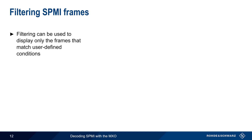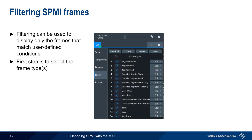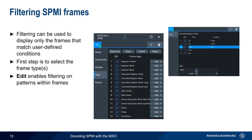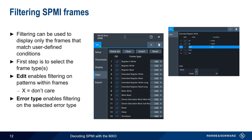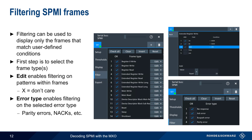Filtering can be applied to the decode results so as to display only frames which match user-defined conditions. The first step is selecting the type or types of frames to filter on, after which Edit can be used to enable filtering on patterns or fields within the frame. The field values can be specified in various ways, including the use of X for don't care. In addition, filters can be created to filter on various types of errors — for example, frames that fail the parity check, or frames that are NACKed, or negatively acknowledged by the receiver.